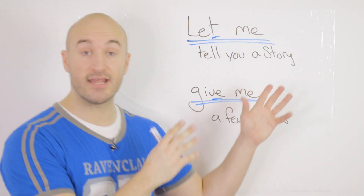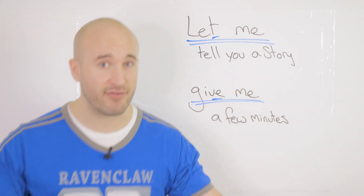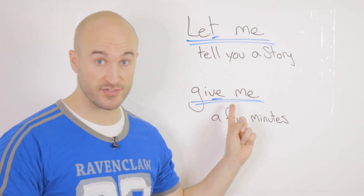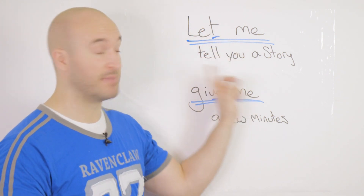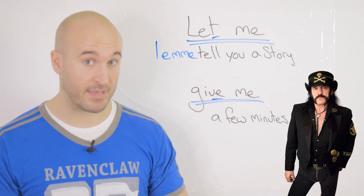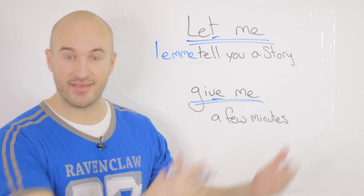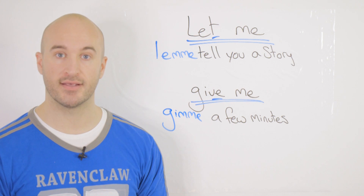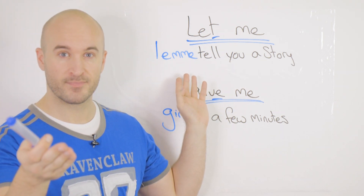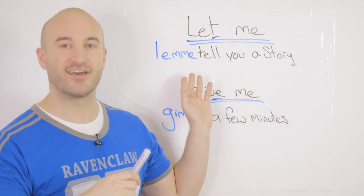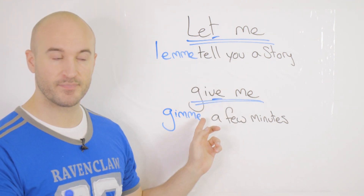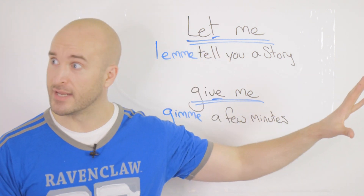'Let me' and 'give me' — very easy. Just remove the last sound of those two words. 'Let me' becomes 'lemme,' and 'give me' becomes 'gimme.' Repeat with me: 'lemme' — 'Let me tell you a story.' 'Gimme' — 'Gimme a few minutes.'